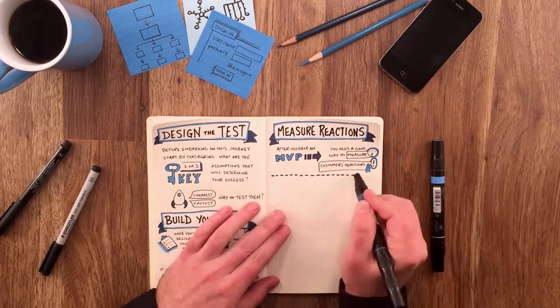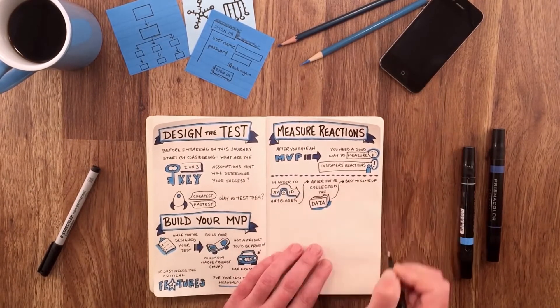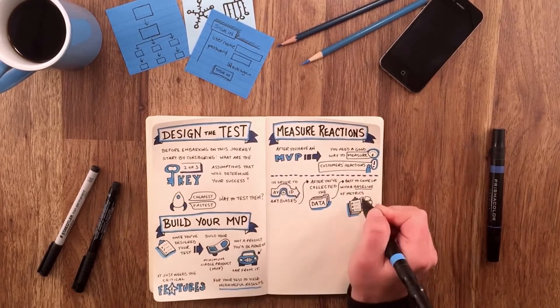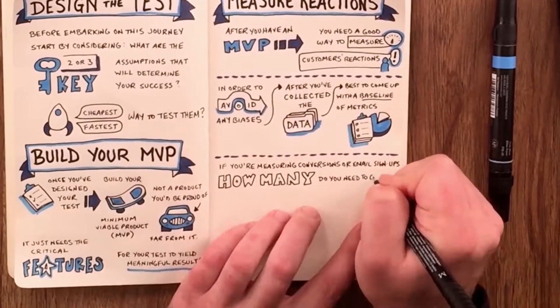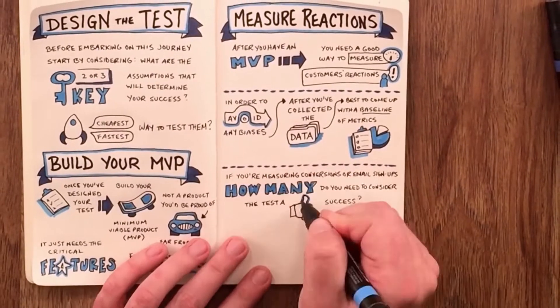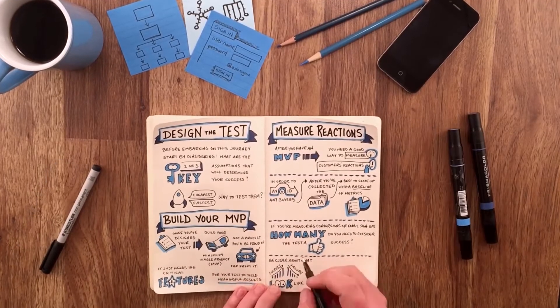After you have an MVP, you need a good way to measure your customers' reactions in order to avoid any biases. It's best to come up with a baseline of metrics up front. If you're measuring conversions or email signups, how many do you need to consider the test a success? Be clear about what success and failure look like, because it's going to be much harder to distinguish between the two later.